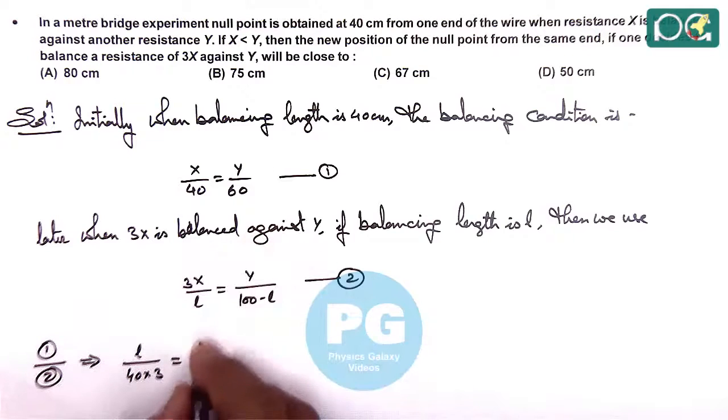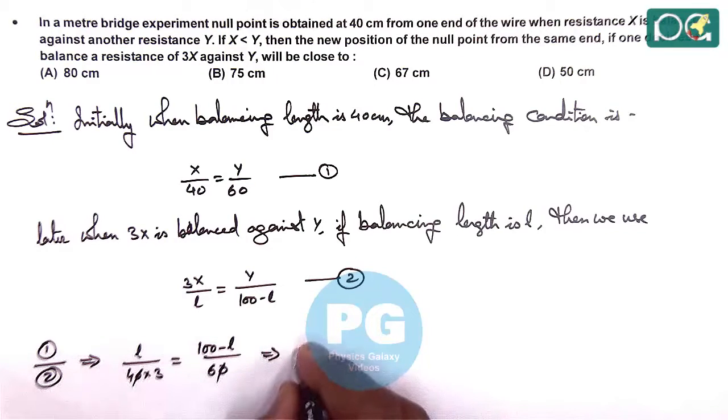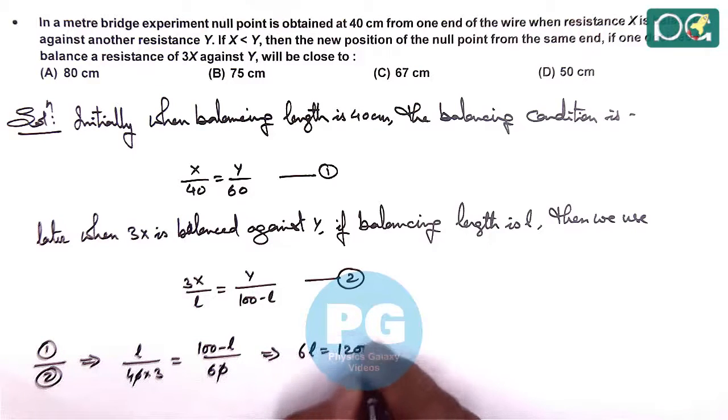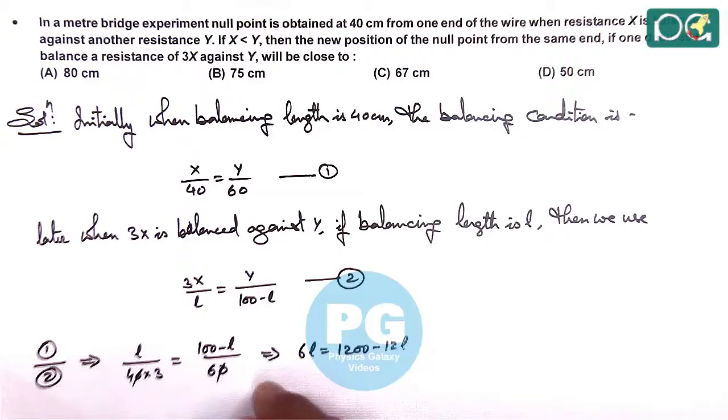is equal to 100 minus l by 60. So here simplifying and cross multiplying we are getting 6l equals 1200 minus 12l. So this gives l equals 1200 by 18,